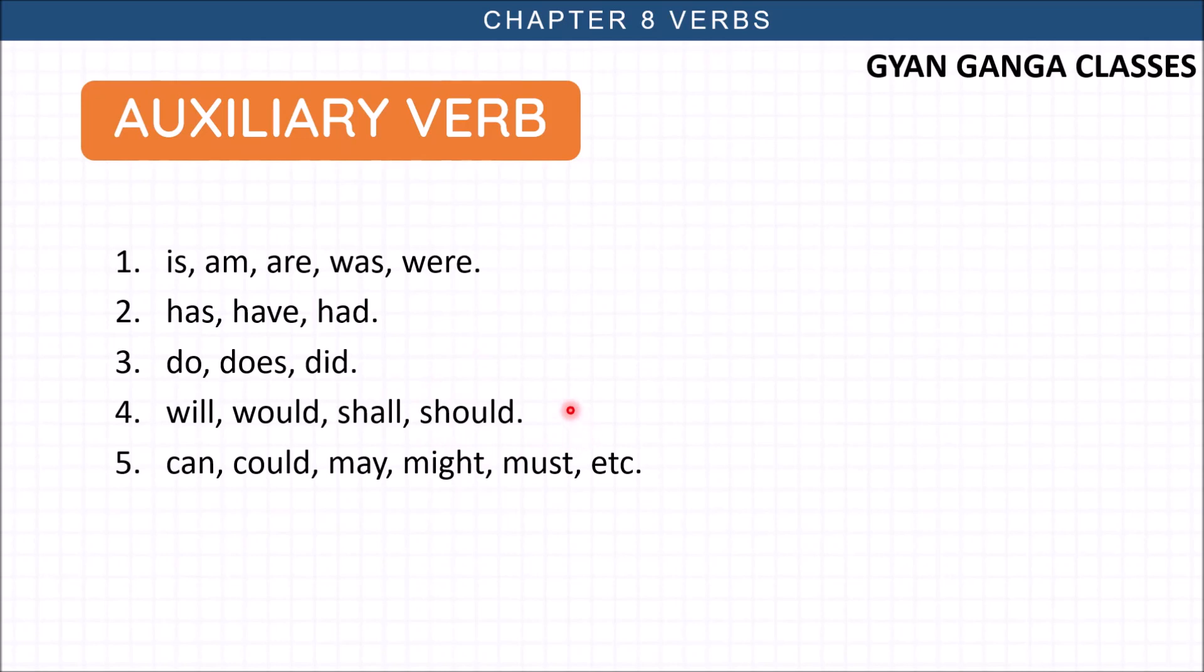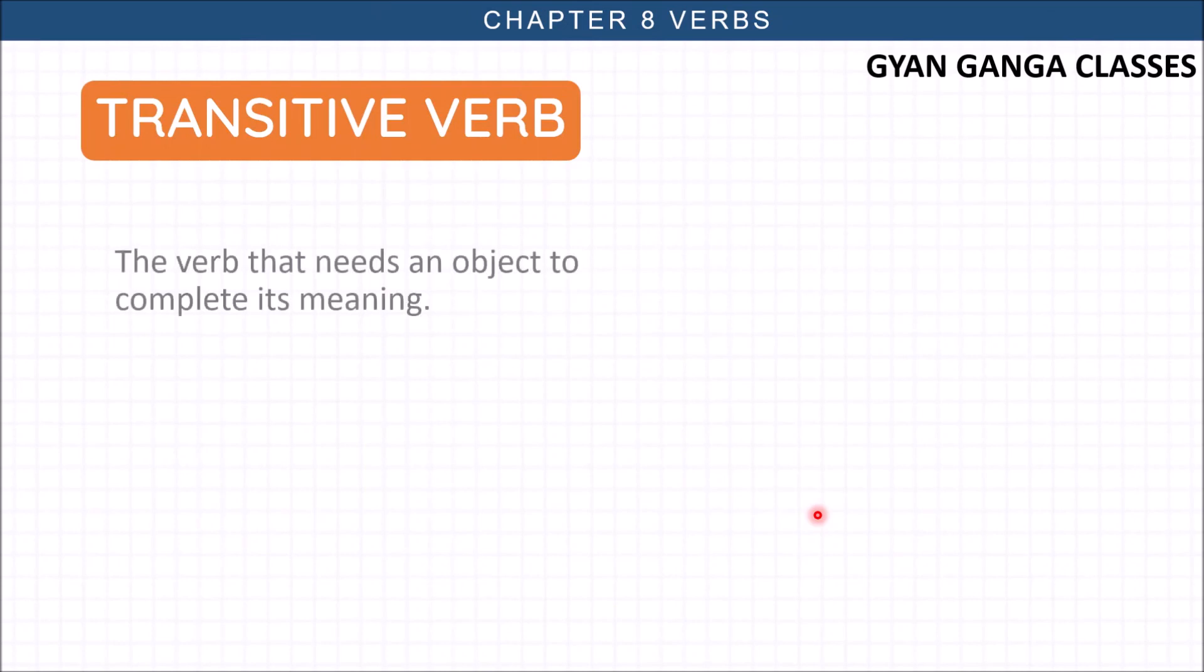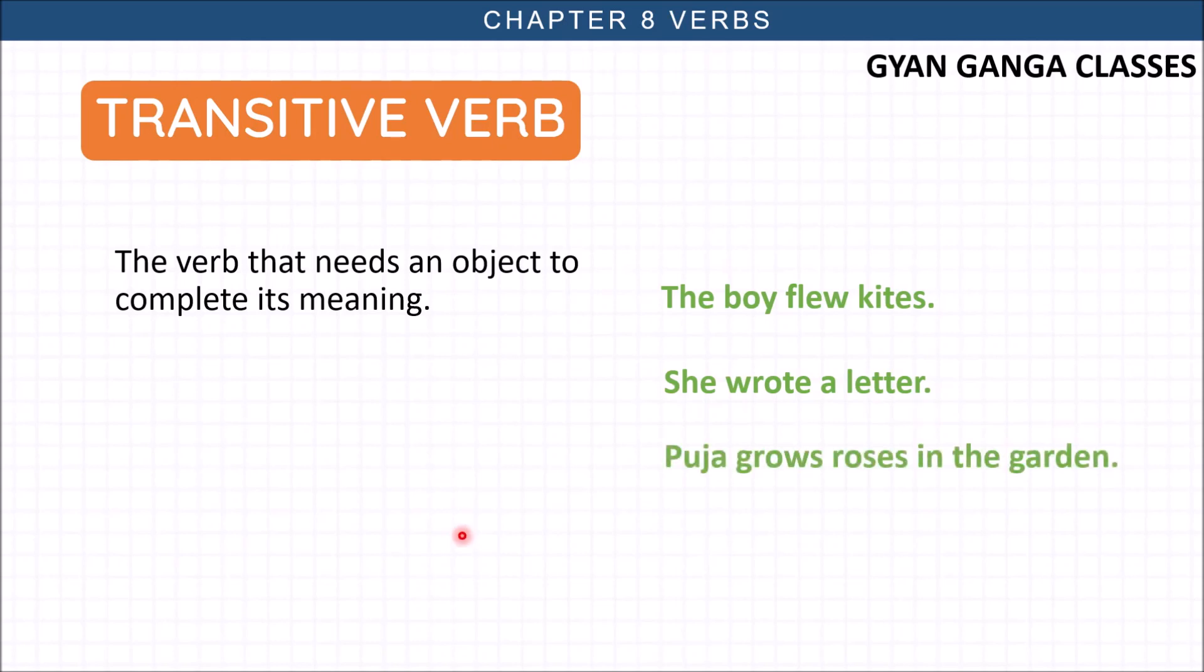Transitive verb - the verb that needs an object to complete its meaning. Transitive verbs need an object. The boy flew kites. She wrote a letter. Pooja grows roses in the garden. Without roses, Pooja grows is just a random case. What she is growing we don't know, so we need an object to complete the verb.